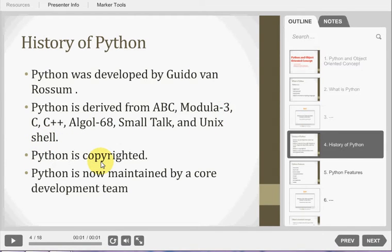Python is copyrighted like Perl. But Python source code is now available under GNU General Public License. Python is now maintained by the core development team of that institute.